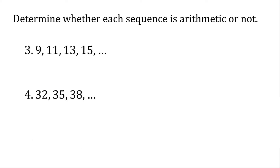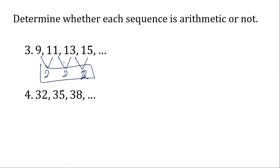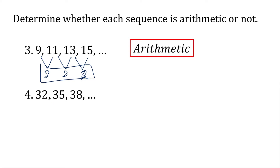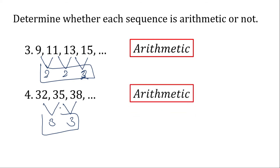Number 3. Let's check it again. 11 minus 9 is 2. 13 minus 11 is 2. 15 minus 13 is 2. We have a common difference of 2, so therefore it is an arithmetic sequence. For number 4: 35 minus 32 is 3, and 38 minus 35 is 3. They are common, so the common difference is 3. We can consider number 4 an arithmetic sequence.